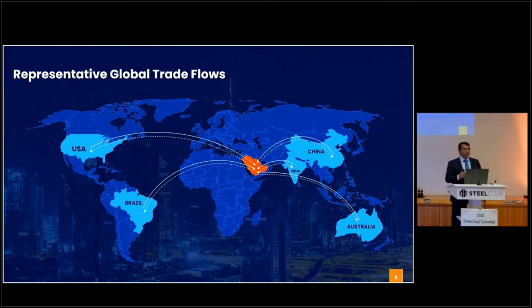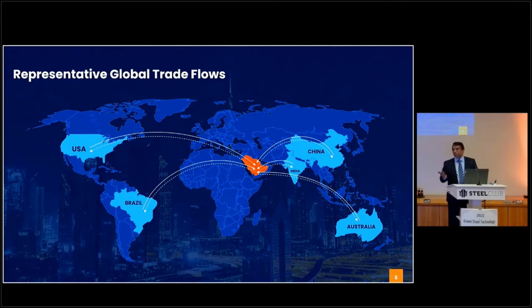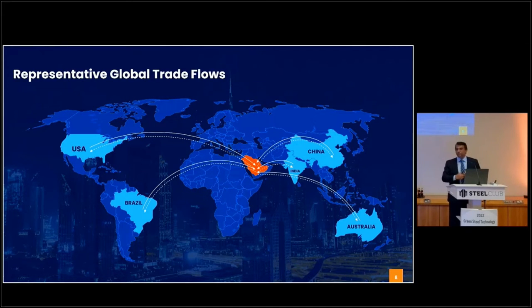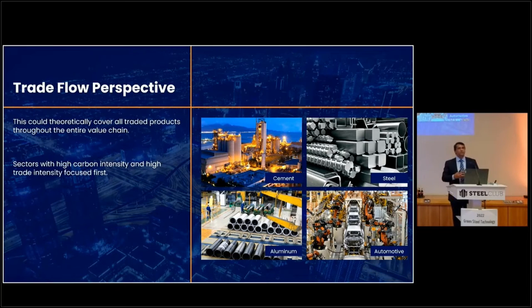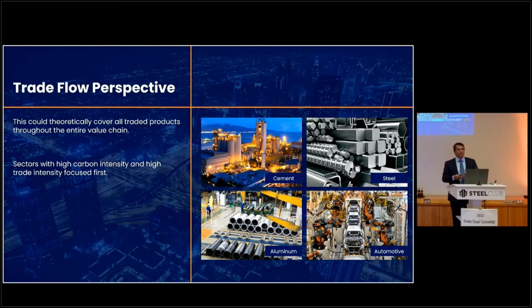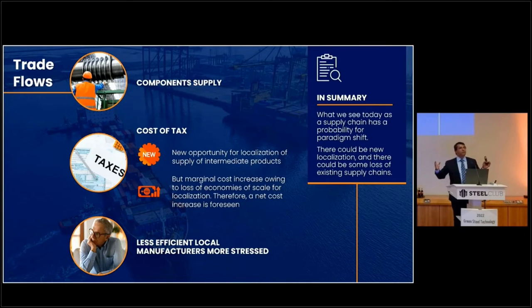The first perspective is from global trade flows. UAE, like any other country, has trade flows to almost all countries across the world, especially for gas, oil, steel, chemicals, and aluminium — hundreds of things going out of UAE and coming in from across the world. When we talk about decarbonisation, there are four major sectors which can help the world reduce its footprint significantly: steel, aluminium, transportation, and cement.